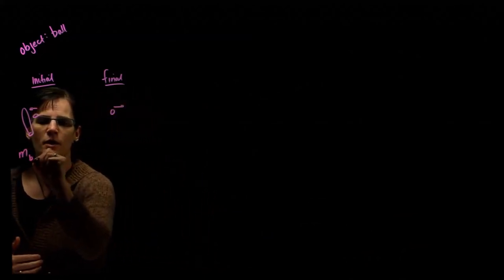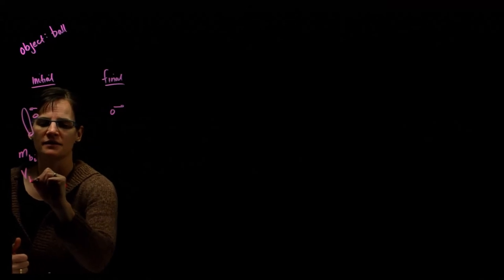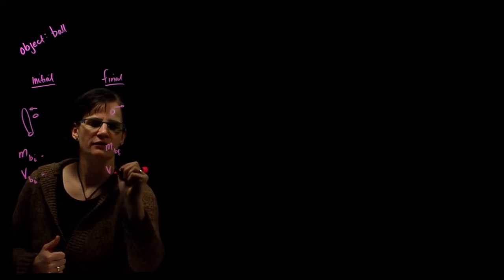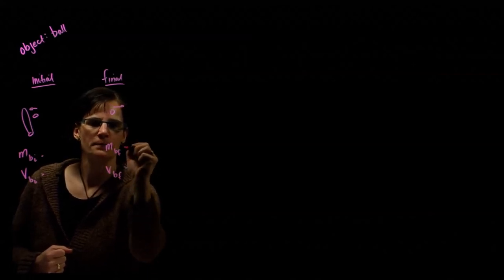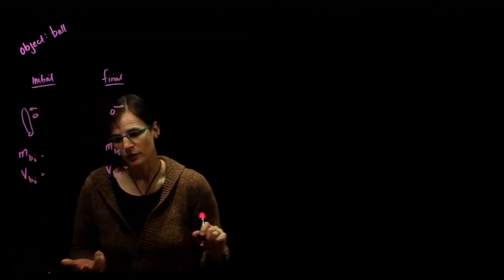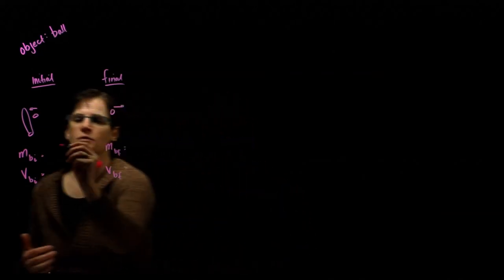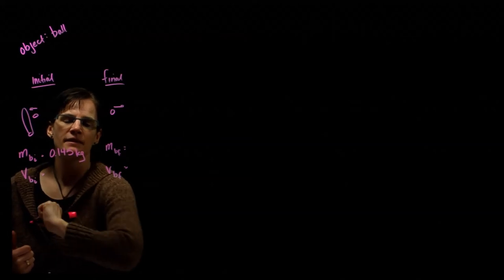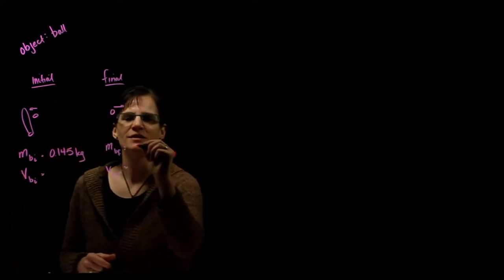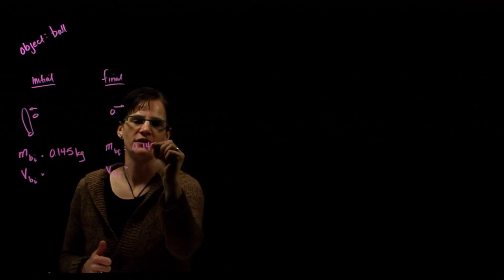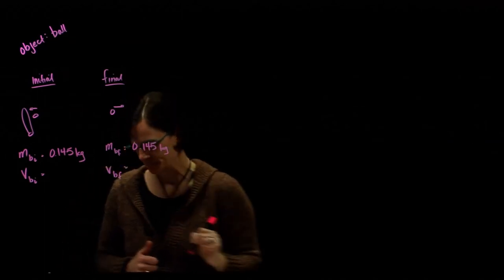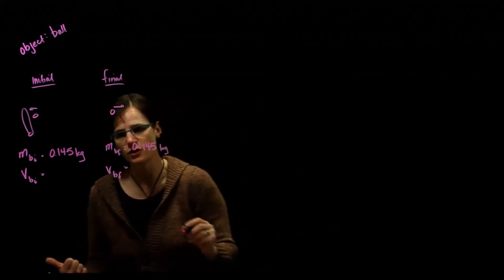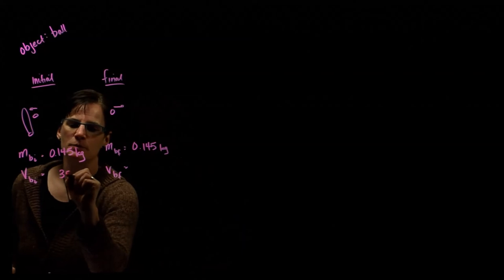So we have the mass of the ball initial and the velocity of the ball initial, and then we have the mass of the ball final and velocity of the ball final. The mass of the ball is 145 grams, so 0.145 kilograms initially, and that doesn't change, so in the final condition we have 0.145 kilograms as well.